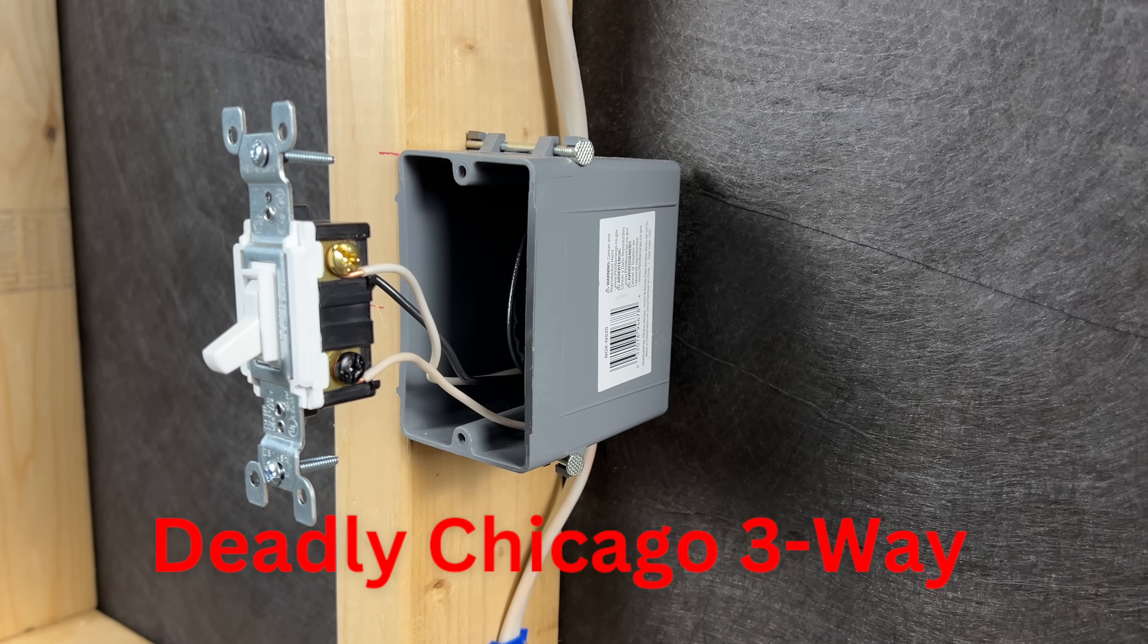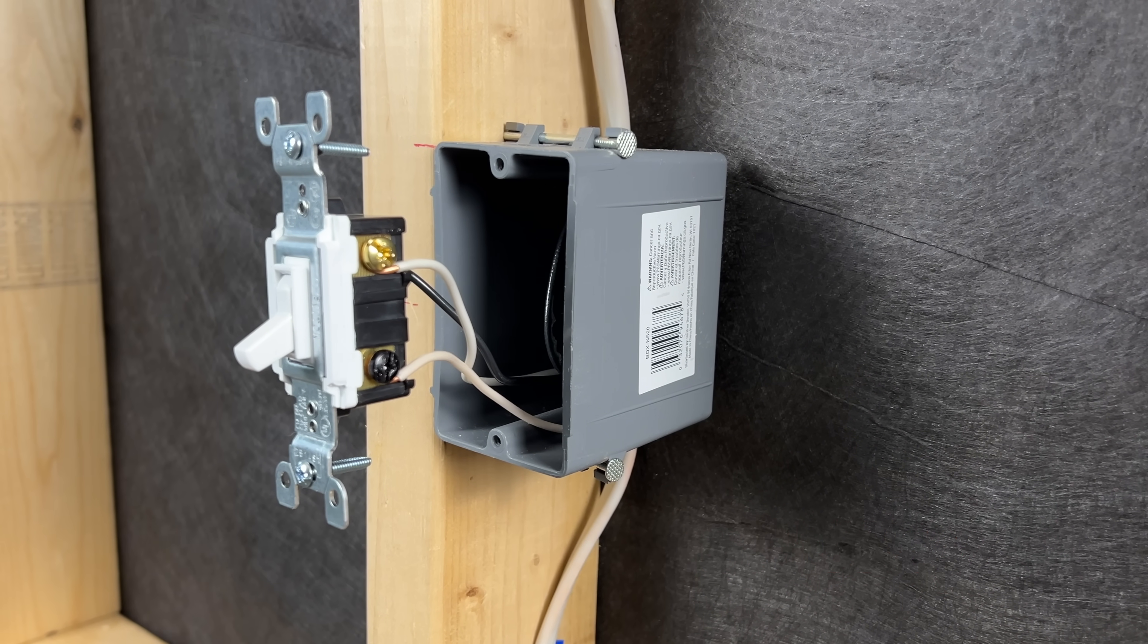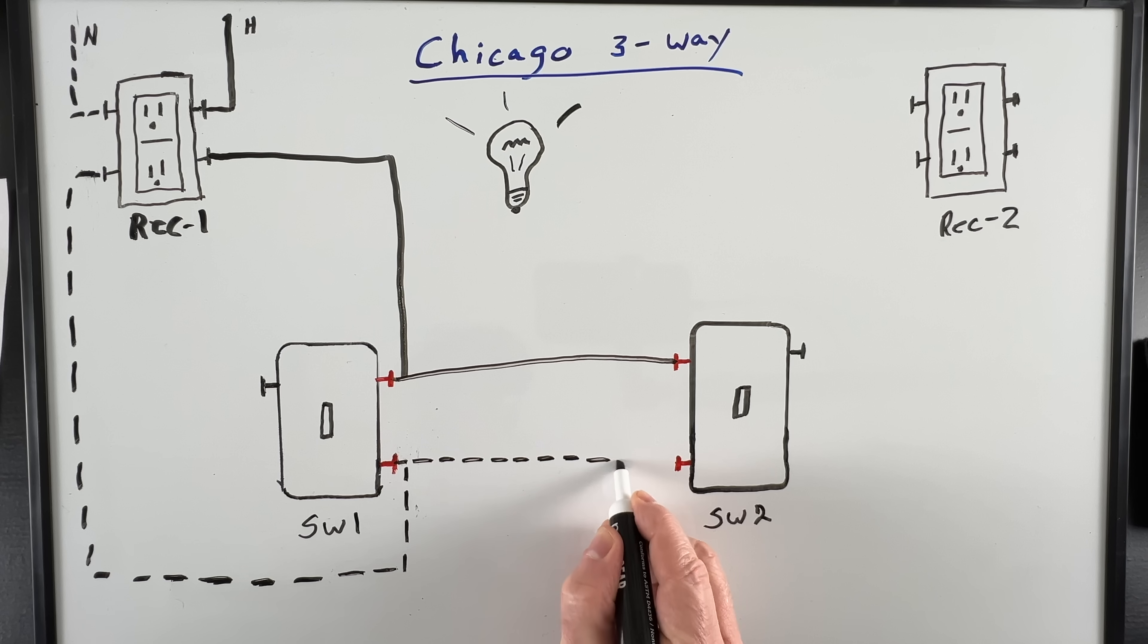The deadly Chicago three-way is an old two-wire method used to wire three-way switches. Have you ever seen one of these before? If not, you're going to be amazed at how these are wired.